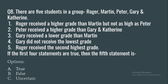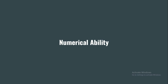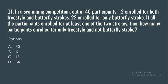Question 8: There are five students — Roger, Martin, Peter, Gray, and Catherine. Roger received a higher grade than Martin but not as high as Peter. Peter received a higher grade than Gray and Catherine. Gray received a lower grade than Martin. Gray did not receive the lowest grade. Roger received the second highest grade. If the first four statements are true, then the fifth statement is: true, false, or uncertain.